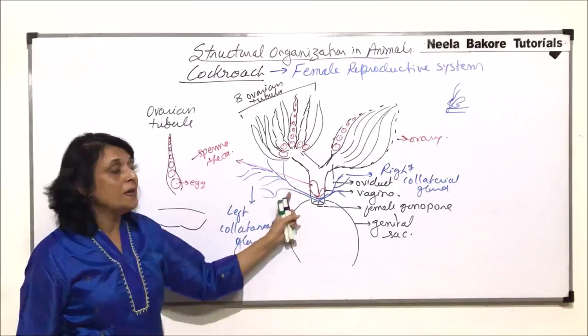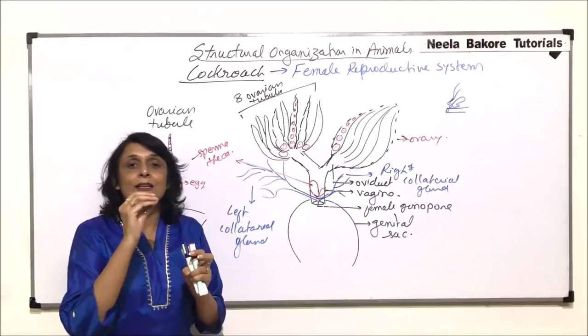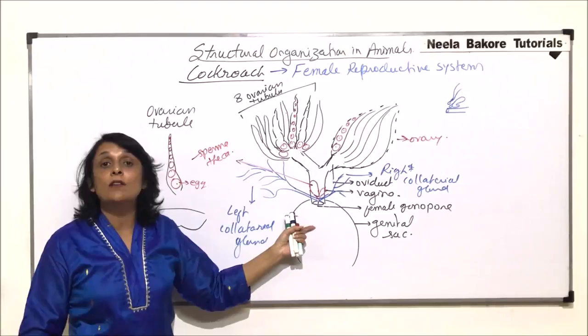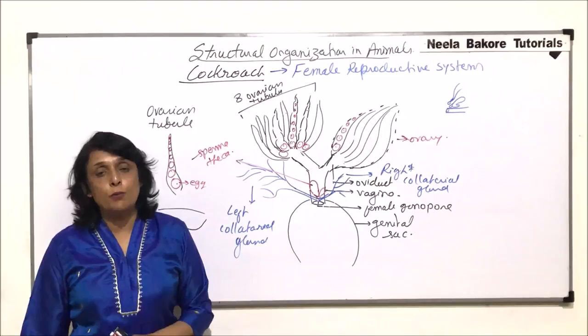After the eggs are fertilized, there would be secretion from these collateral glands which would harden, so that the zygotes formed remain inside that hard structure which is called the ootheca. Then the ootheca is deposited, from where the young ones, which are called the nymphs, would hatch.